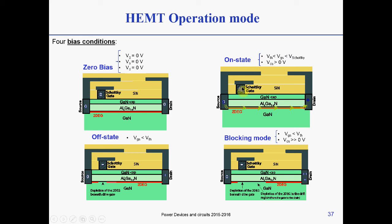In the off state, the gate has to go lower than the threshold voltage. Values of threshold voltage for these devices are on the order of minus 2 to minus 3 volts. So if you put the gate at minus 5 or minus 7, you have the device in off state and deplete the channel under the gate. In blocking mode, you have very high voltage on the drain with the gate at negative bias below the threshold voltage.